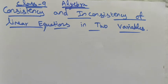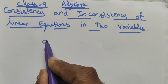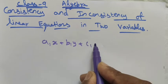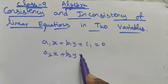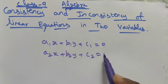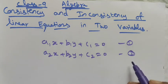Hi students, Class 9 Algebra — consistency and inconsistency of linear equations in two variables. First, let's look at what linear equations in two variables are. The general form is: a1x + b1y + c1 = 0 and a2x + b2y + c2 = 0. Let's call these Equation 1 and Equation 2. Here we are going to take only two equations.